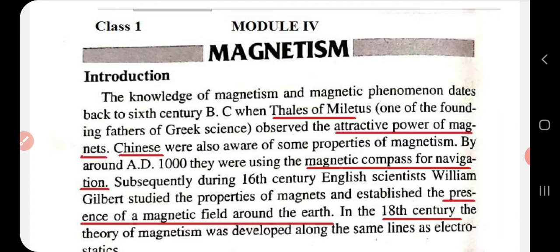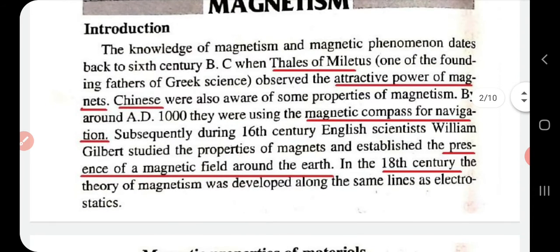Later, the Chinese took over research on magnetism, and by around 800 AD the magnetic compass was used for navigation purposes — especially for determining directions in ship navigation. Then in the 16th century, William Gilbert, an English scientist, studied the properties of magnets in detail and established that Earth possesses a magnetic field.